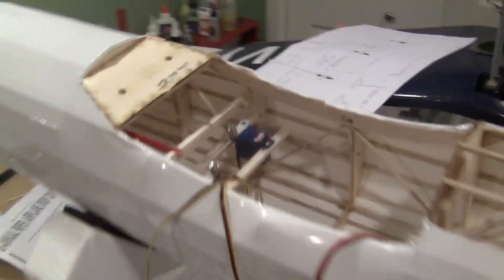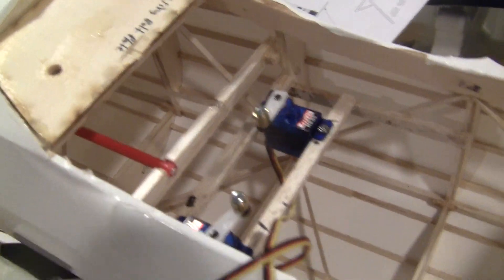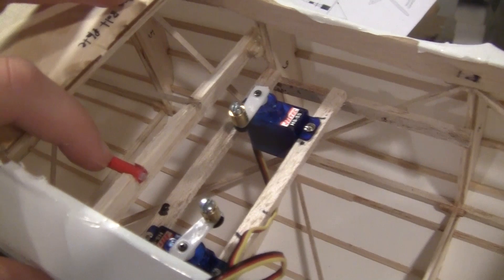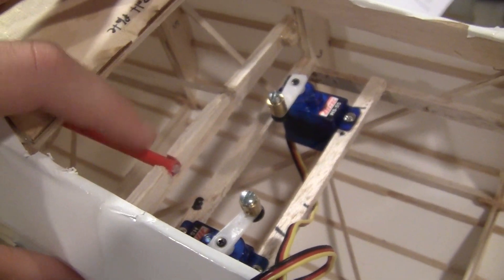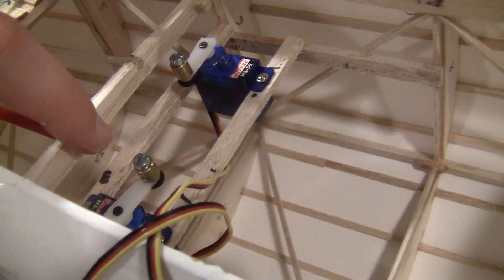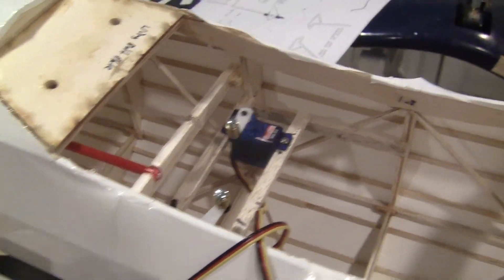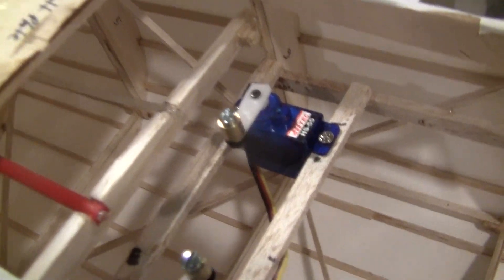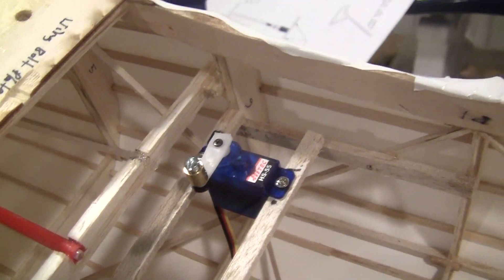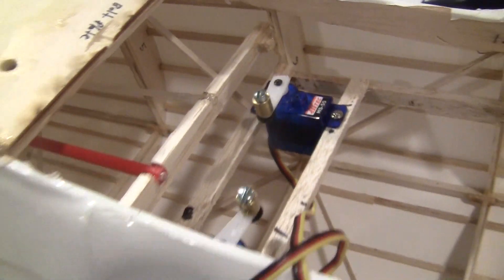And I finished all the elevator and rudder push rods. I'm using a Sullivan, I think it's a 507 guide here with a smaller Duro 0.060, a little beefier wire for the elevator, and then just a standard easy connector wire, I think it's 0.04 or something for the rudder.